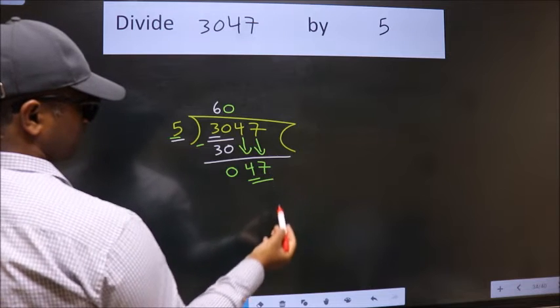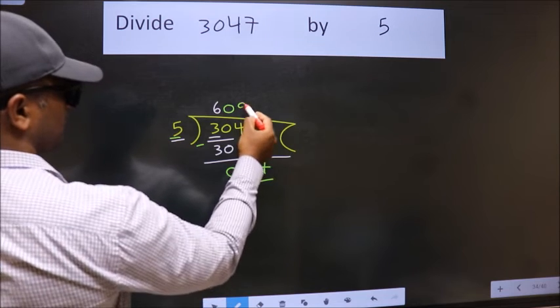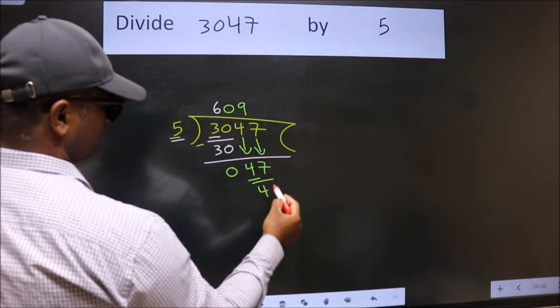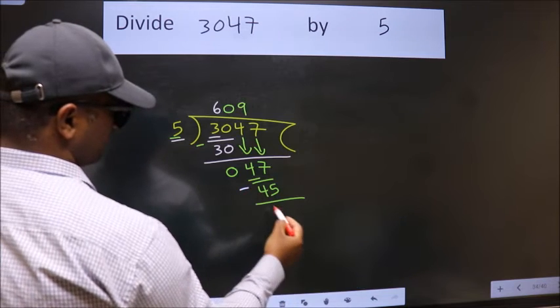So, 47. A number close to 47 in 5 table is 5 nines 45. Now, we subtract. We get 2.